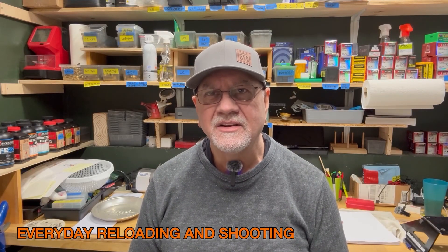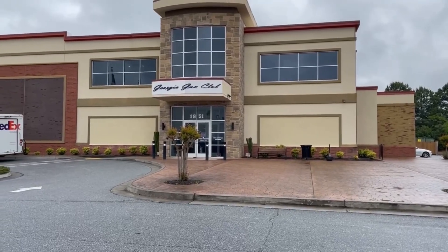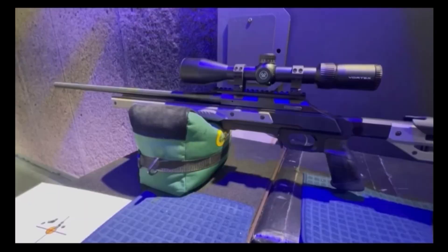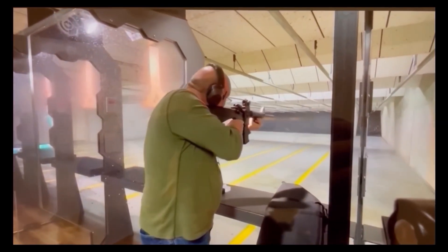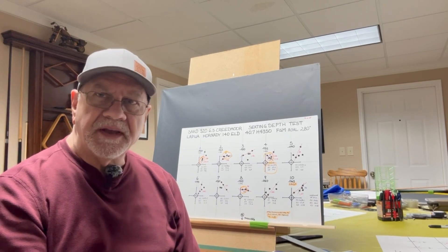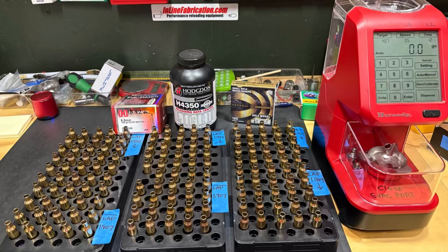Hi, I'm Dennis Phillips and welcome to Everyday Reloading and Shooting. Let me give you a brief introduction to today's video. There's a photograph here of several loading blocks pictured with 6.5 Creedmoor shell cases. These are primed and charged with 40.7 grains of H4350 powder.